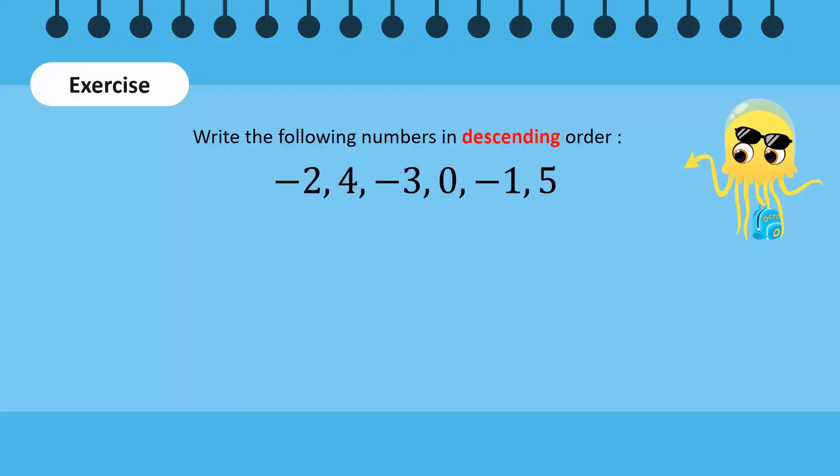Can you arrange the same list of numbers in descending order? The order will be 5, 4, 0, minus 1, minus 2, and minus 3.